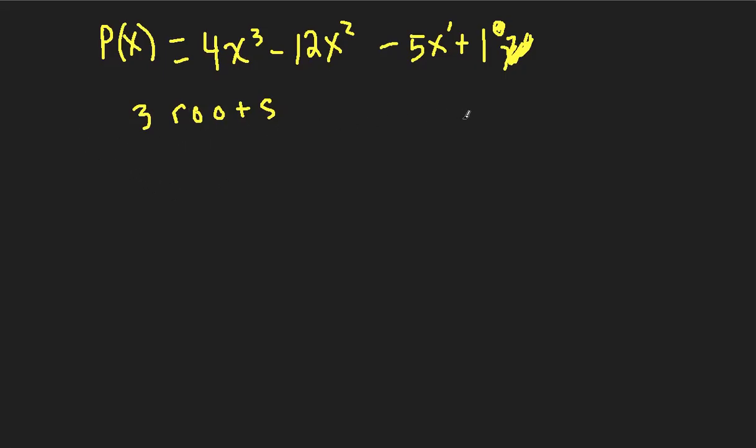So in order to do Descartes' first rule of signs, we're going to keep it with P(x). So I'm just going to write it again, P(x) is equal to 4x cubed minus 12x squared minus 5x plus 1. And all we're doing here is counting the signs.